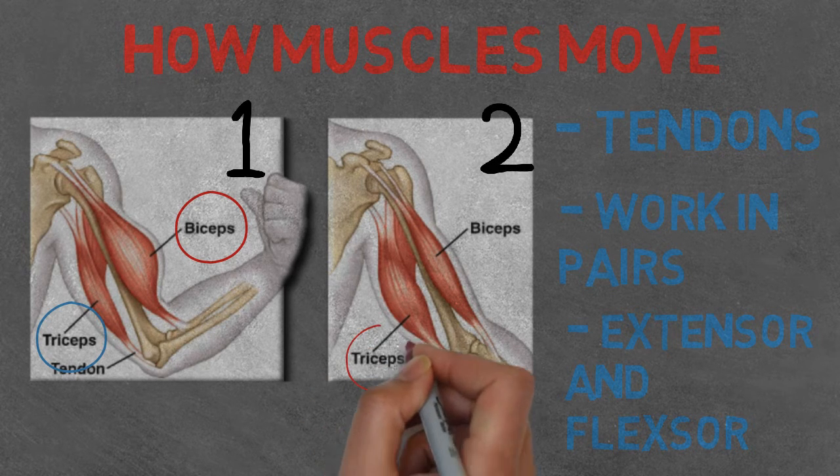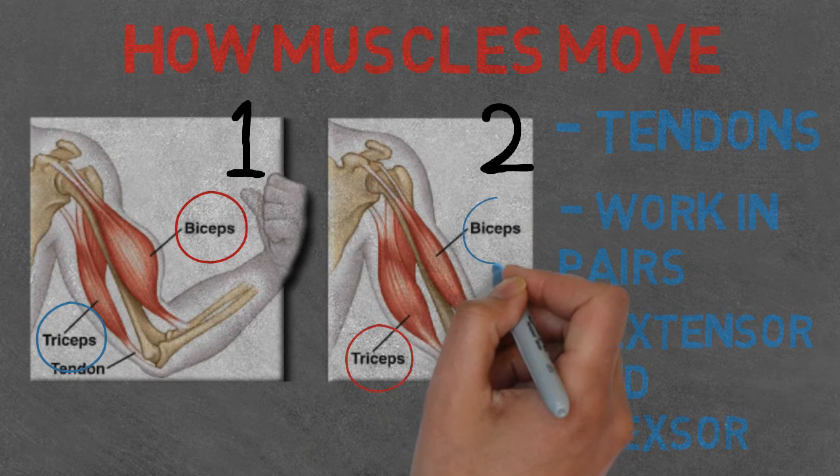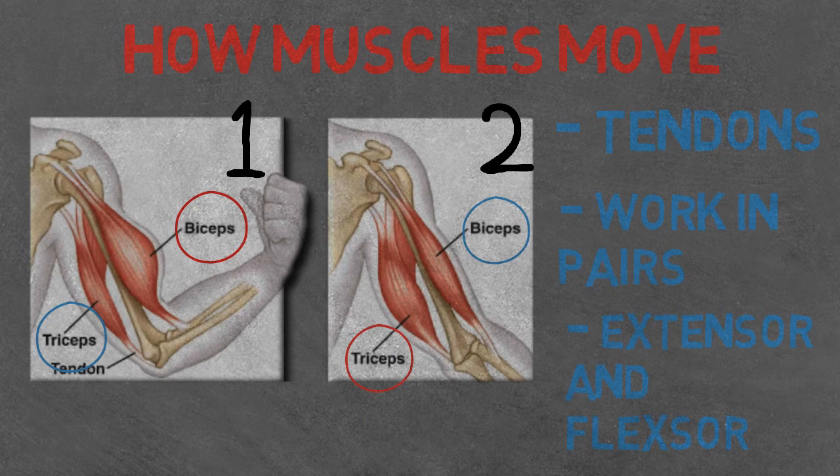In picture two, instead of the bicep flexing, the tricep is flexing, which straightens your arm. And the bicep is extending to allow the movement to occur.